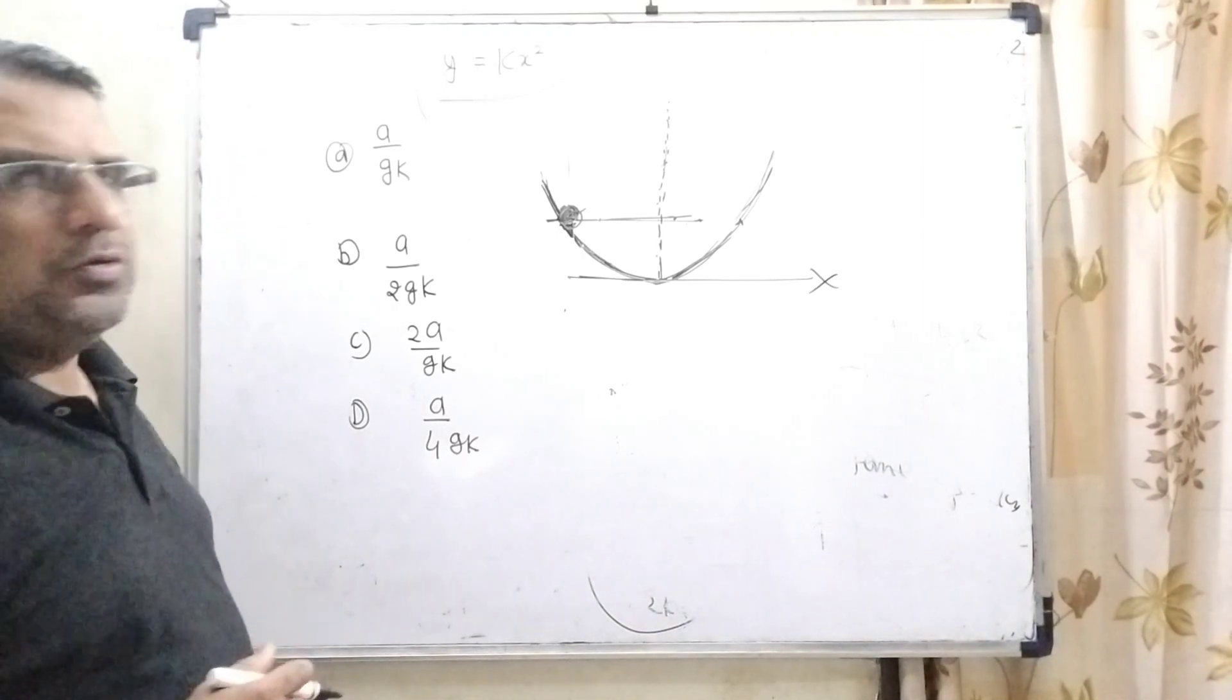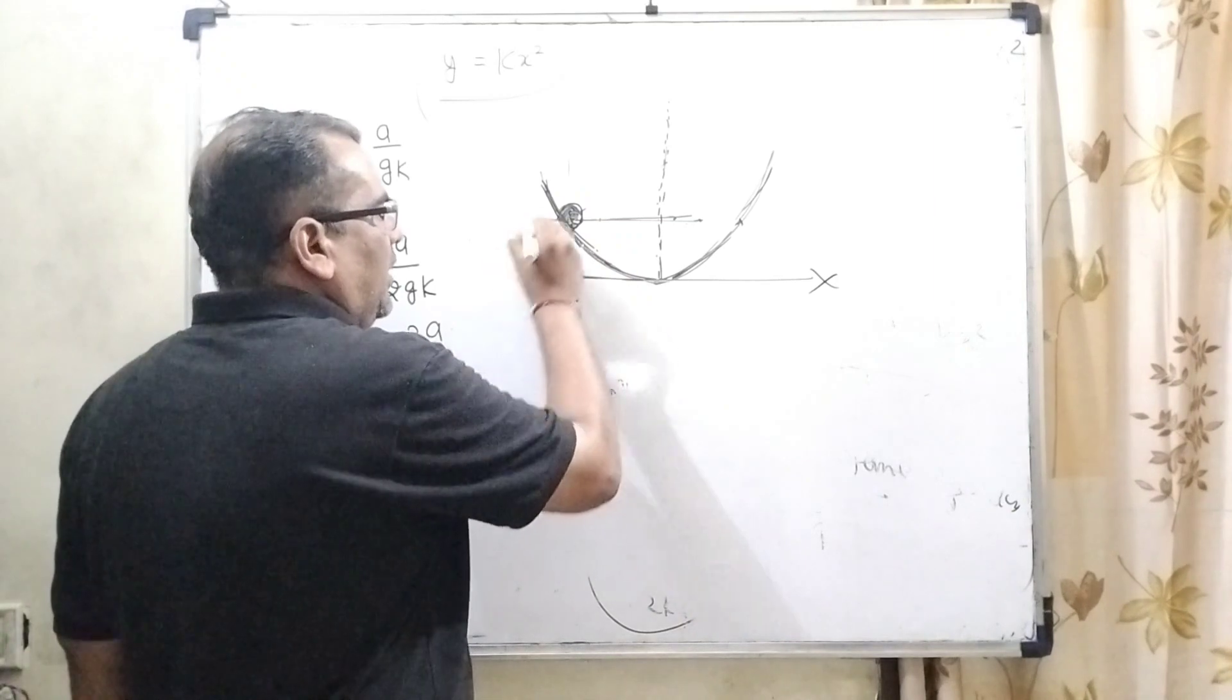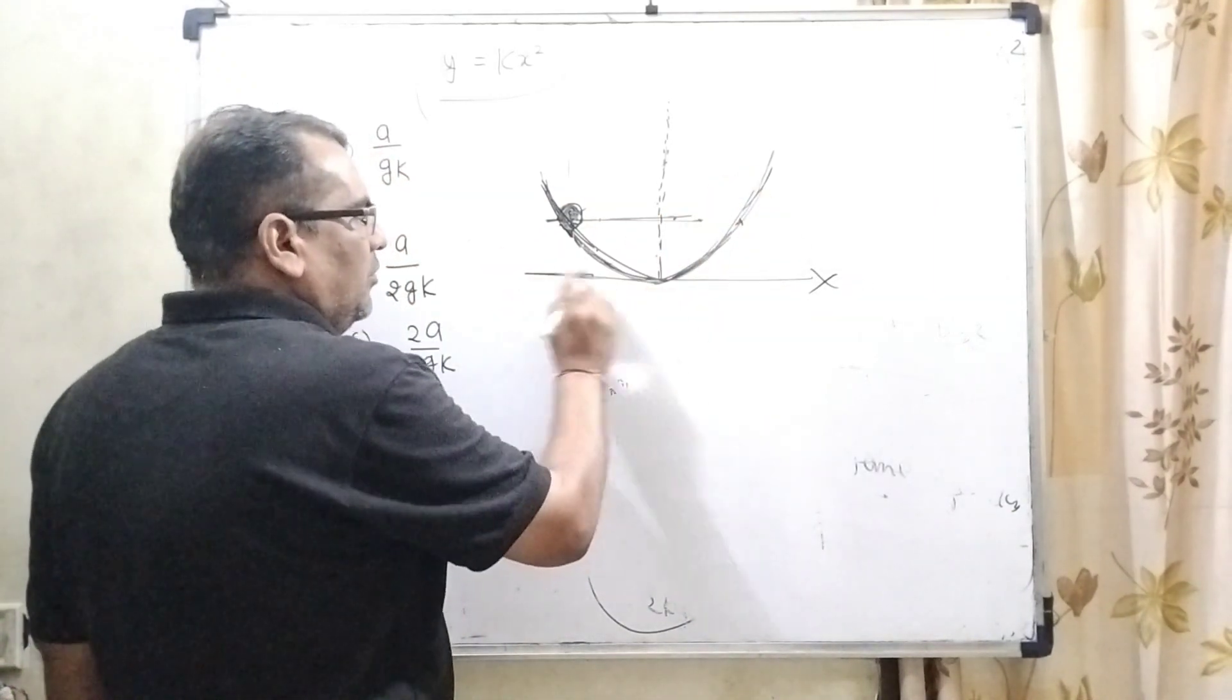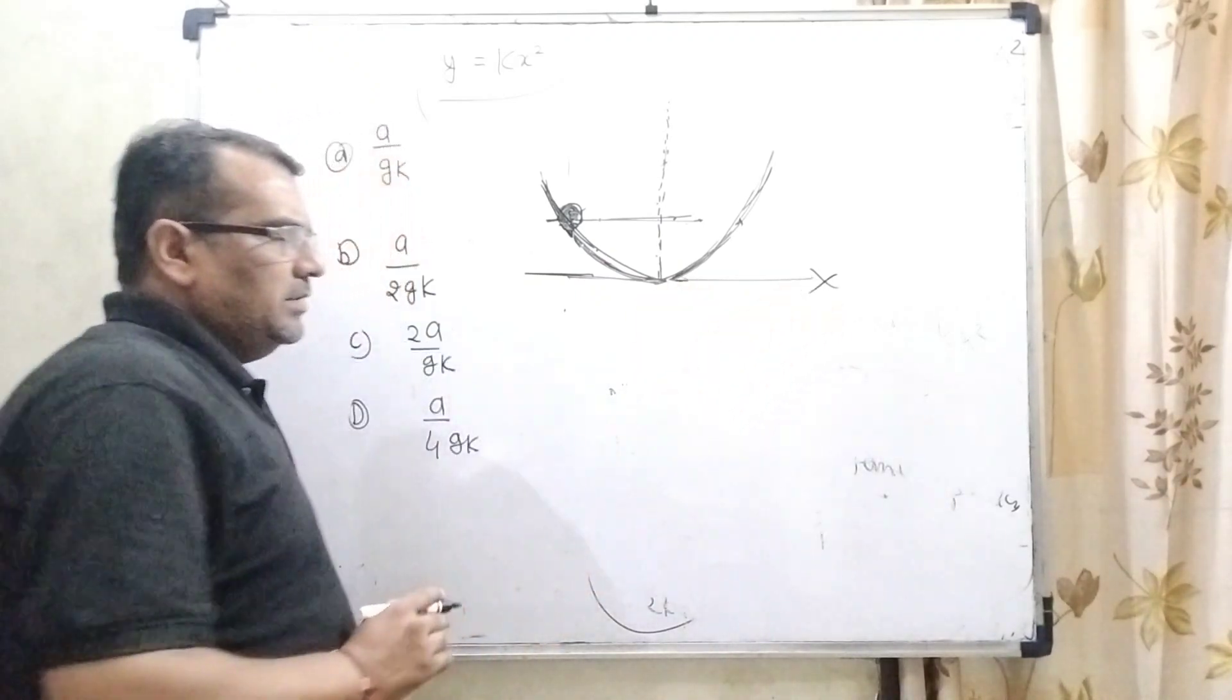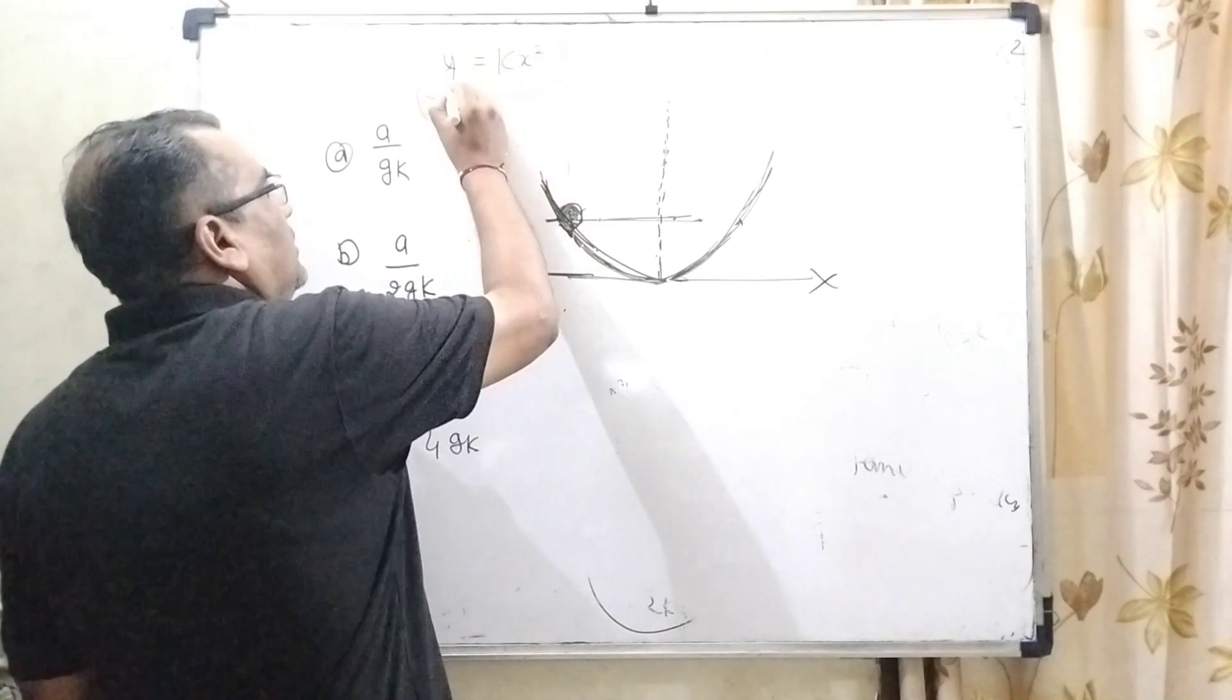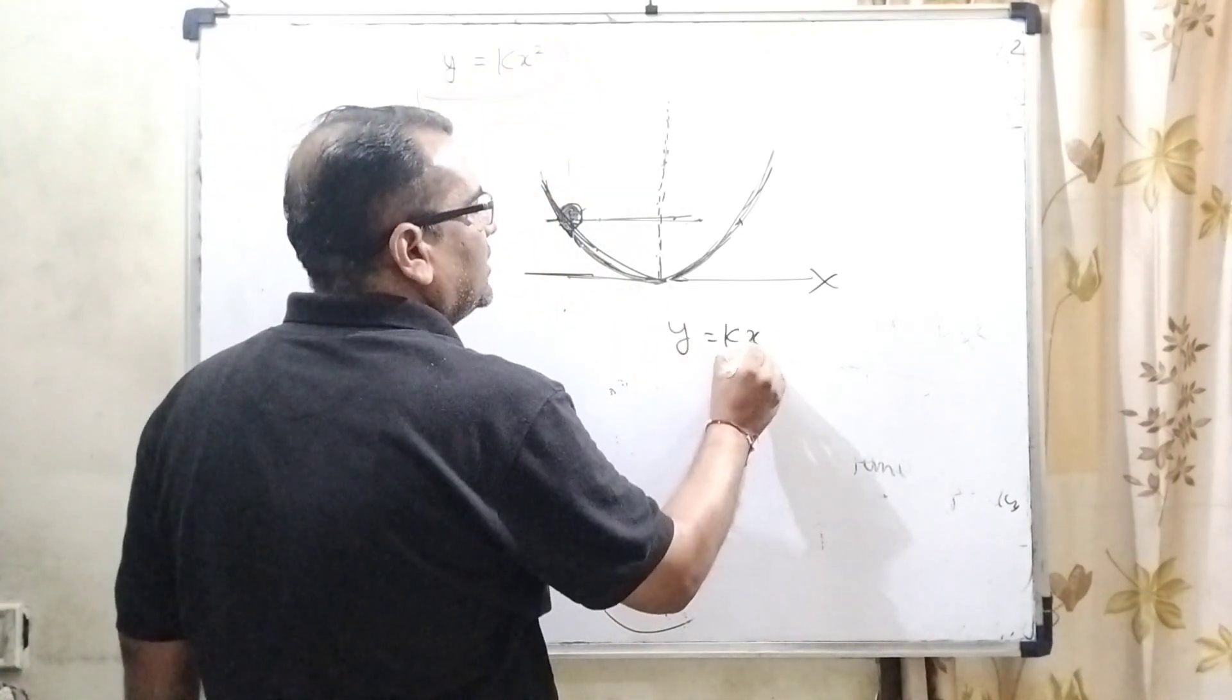Here what the question says: a bead is kept on a wire and the wire is bent like a parabola, and it is moving towards the x direction. And here the equation is given y equals k x squared.